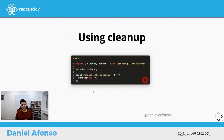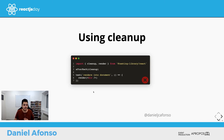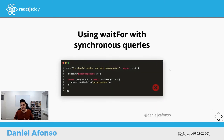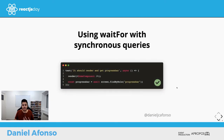Fifth mistake: using cleanup manually. Cleanup is a function that cleans up your entire DOM after each test and unmounts rendered components. As a good practice you might think you should call it manually — but if you're using a framework that supports the afterEach global, the React Testing Library automatically runs cleanup for you after each test. Sixth mistake: using waitFor with a synchronous query like getByRole — instead, use the findBy query, which is specifically designed for this.